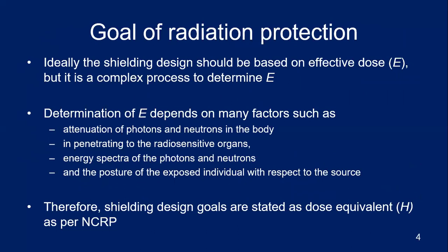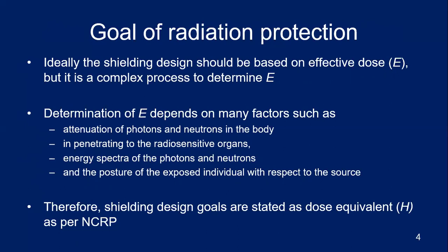What is the goal of radiation protection? Ideally, shielding design should be based on effective dose, that is the whole body effective dose. But the determination of effective dose is a complex process — you need to know the attenuation of photons and neutrons in the body, the penetration to radio-sensitive organs, the energy spectra of photons and neutrons, and the posture of the exposed individual with respect to the source. Therefore, NCRP has recommended that shielding design goals be based on dose equivalent rather than effective dose.